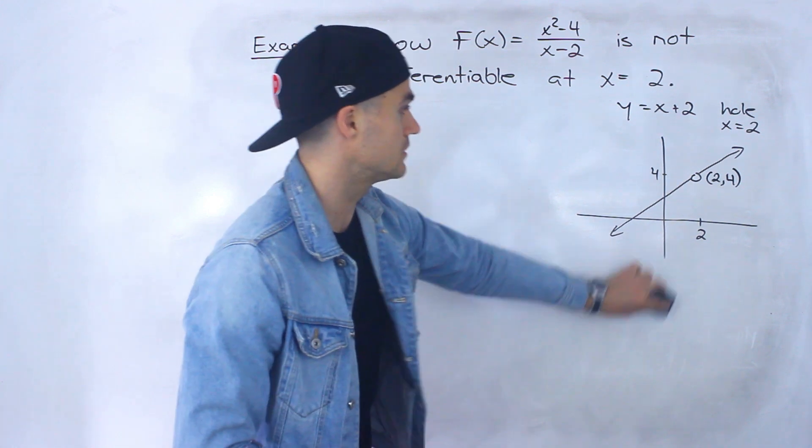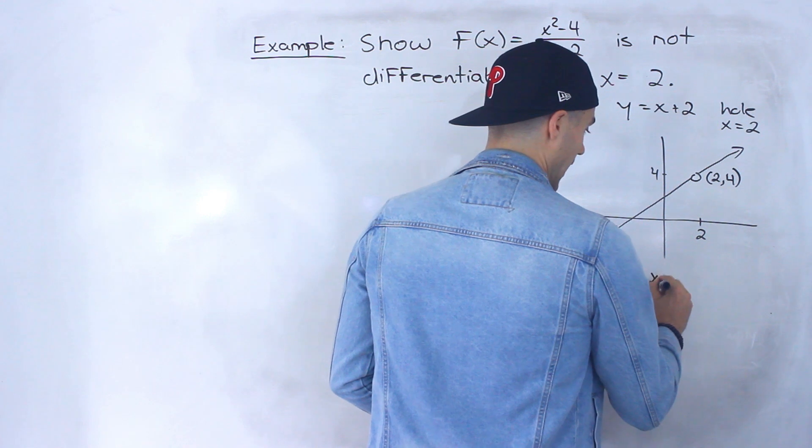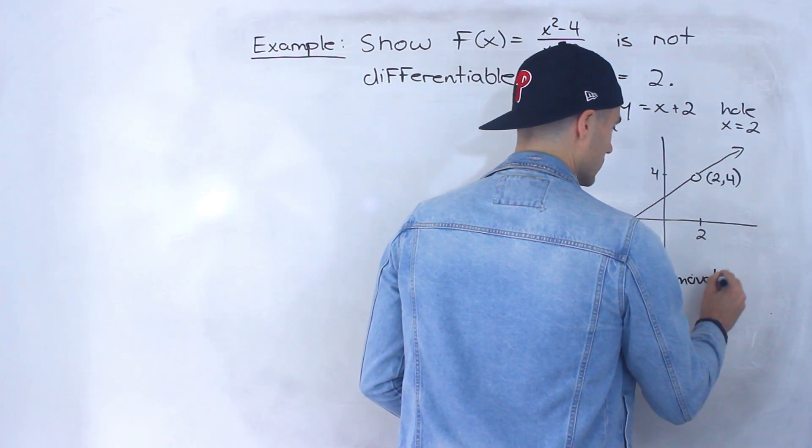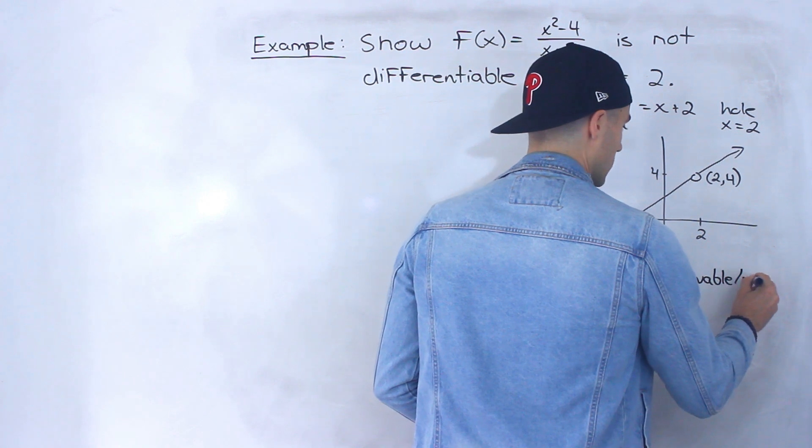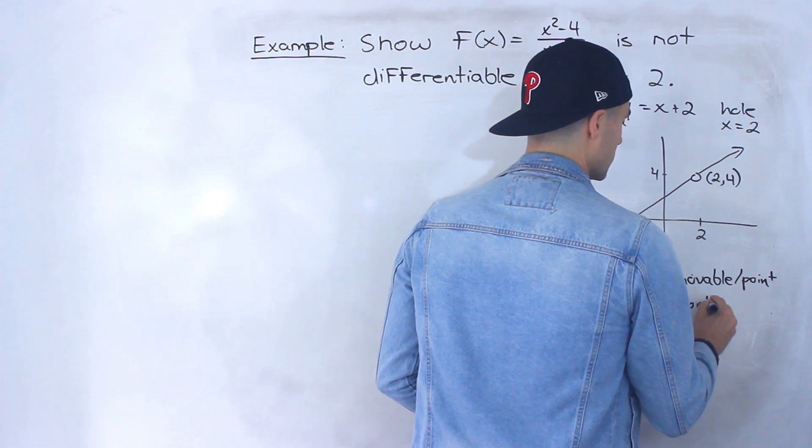So at the coordinate 2 and 4 there is a hole right there. Notice that this function is discontinuous at this x value of 2 and more specifically it's a removable or sometimes it's called a point discontinuity.